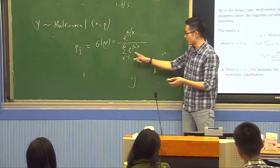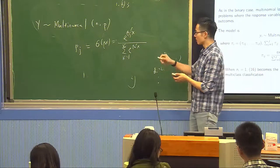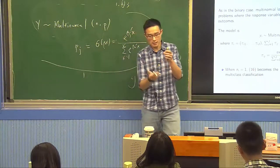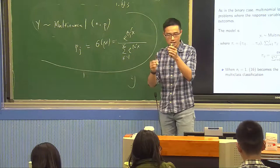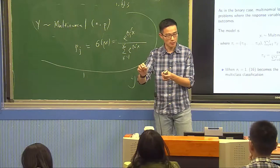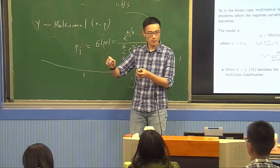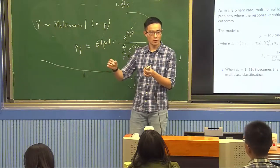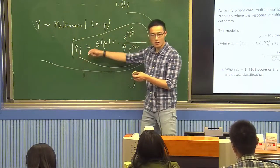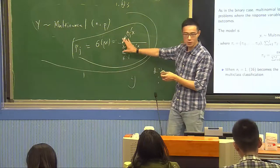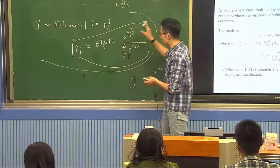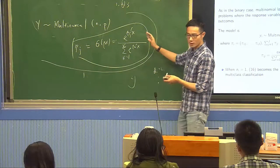What makes this a logistic regression is the assumption that the probability is the softmax function. If we assume some other function for probability, that gives us other kinds of models. This kind of problem — how many people choose which option — is everywhere in economics. This is exactly a multinomial logistic regression framework.